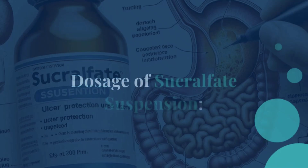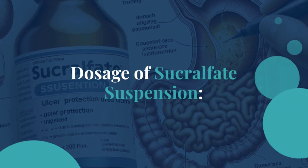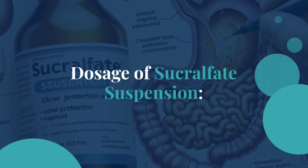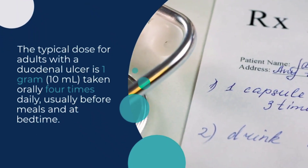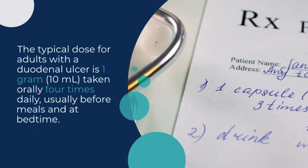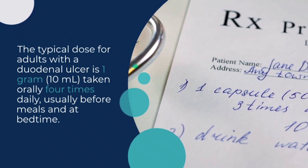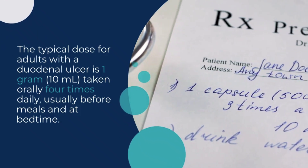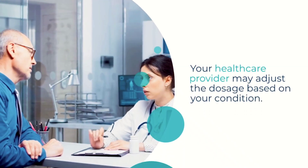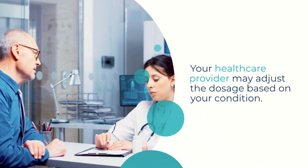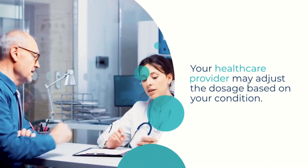Next, dosage of sucralfate suspension. The typical dose for adults with a duodenal ulcer is 1 gram taken orally four times daily, usually before meals and at bedtime. Your healthcare provider may adjust the dosage based on your condition.